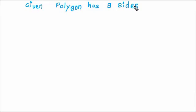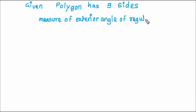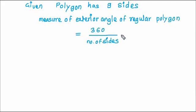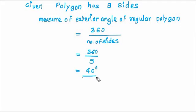Given: the polygon has 9 sides. The formula for exterior angle is: measure of exterior angle is equal to 360 degrees divided by number of sides. In this case, number of sides is 9. So, 360 divided by 9 is equal to 40 degrees. The measure of each exterior angle in this case is 40 degrees.